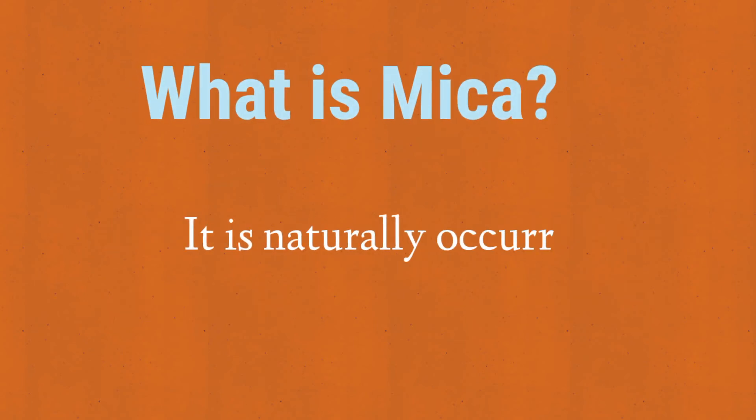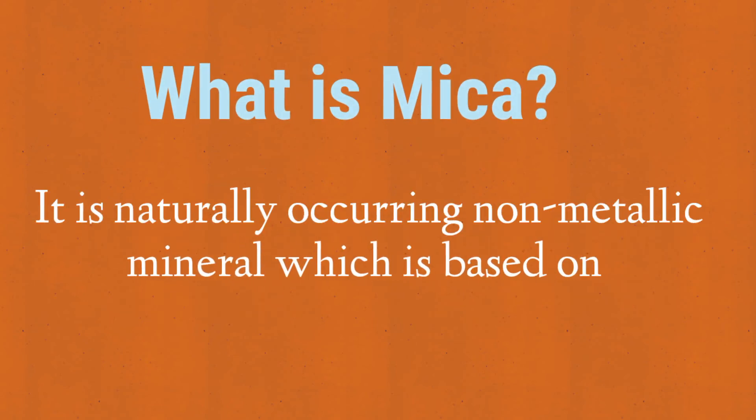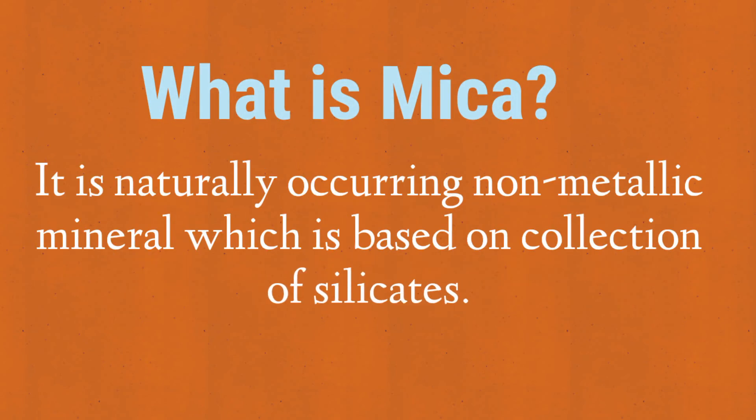Ferrites are classified as isotropic ceramic and anisotropic ceramic. What is mica? It is a naturally occurring non-metallic mineral which is based on a collection of silicates, and it is a good insulator.